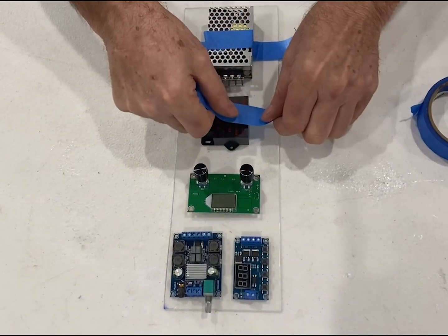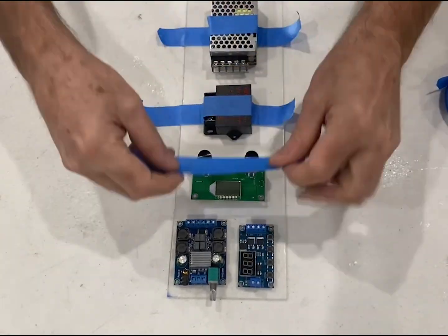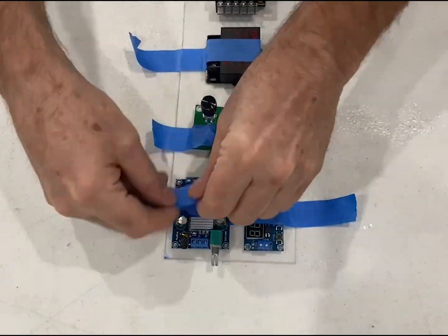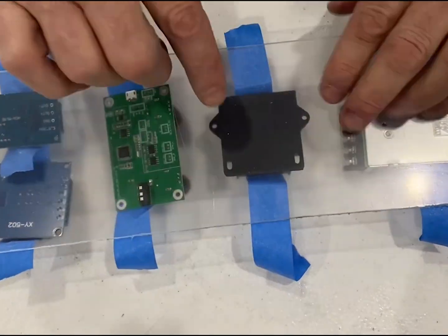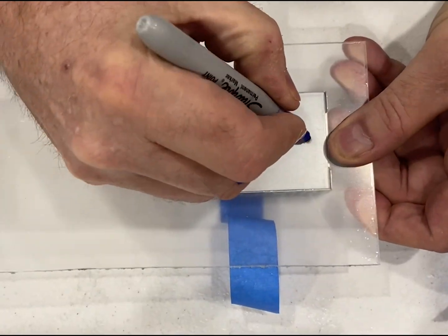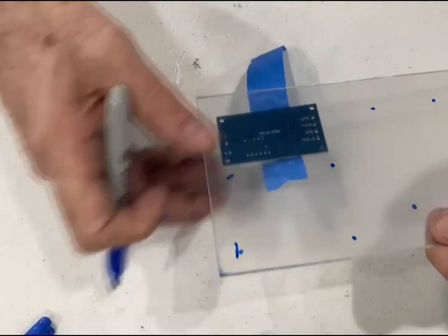You tape them down because once you get in position where you need them, you're going to go to the other side of the acrylic and you're going to mark the holes. Clear acrylic is easy to use. You can get it at a big box store. You can see through it and mark the holes for everything that you're going to mount. I use clear acrylic whenever I do a controller build if needed. Let's go on to drilling the holes.